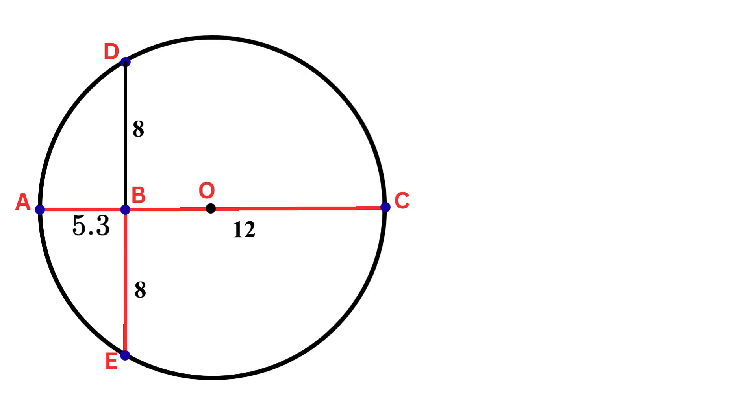We know the diameter AC is the sum of both segments AB and BC. So AC equals 5.3 plus 12. AC equals 17.3 units.